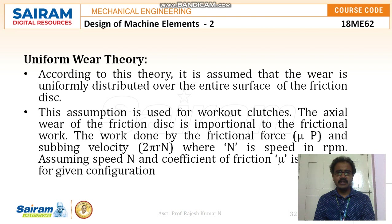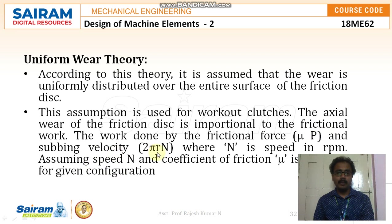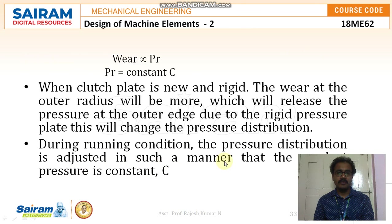According to the uniform wear theory, it is assumed that the wear is uniformly distributed over the entire surface of the friction disc. This assumption is used for worn-out clutches. The axial wear of the friction disc is proportional to the frictional work, and the work done by the frictional force — mu into p (coefficient of friction into intensity of pressure) and the rubbing velocity (2*pi*r*n, where n is speed in rpm). Assuming speed n and coefficient of friction mu are constant, wear is directly proportional to p*r, so p*r = constant c.